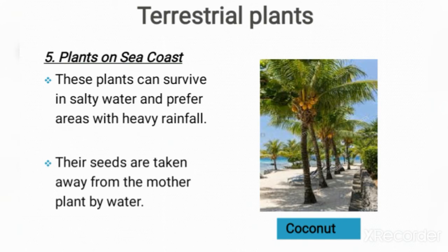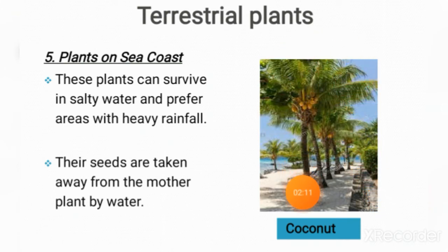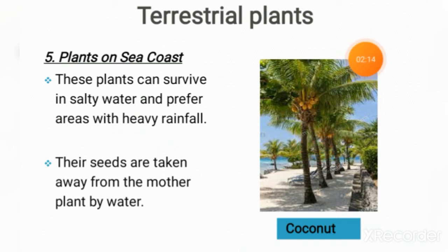One form of dispersal is by water. The seed of the coconut plant is able to float. It falls into the sea or onto a beach and floats along until it reaches a place where, if conditions are favorable, it will grow into a coconut tree.